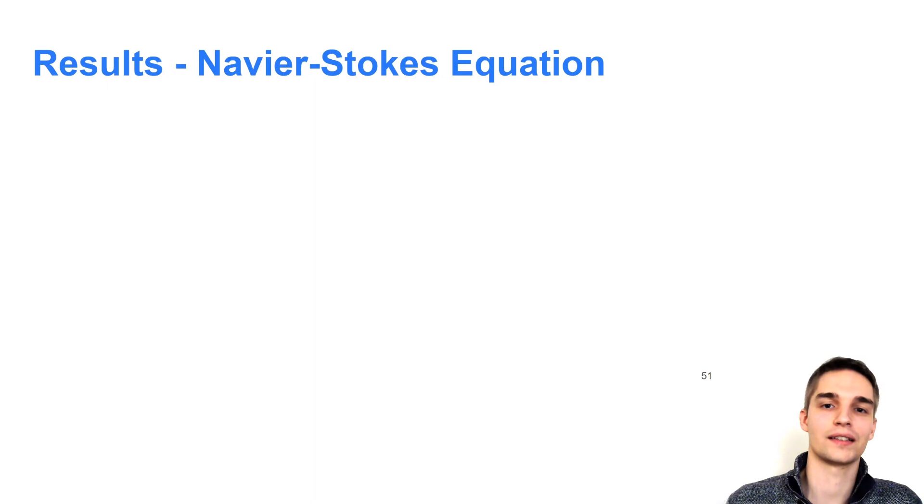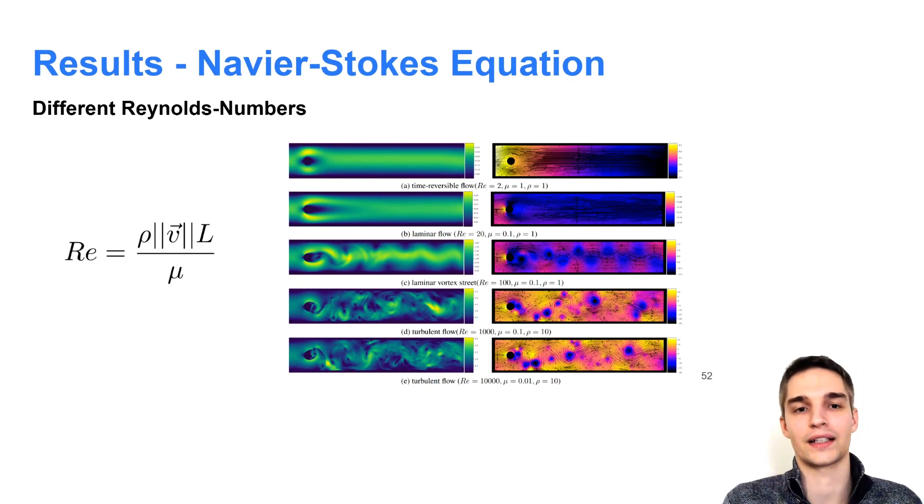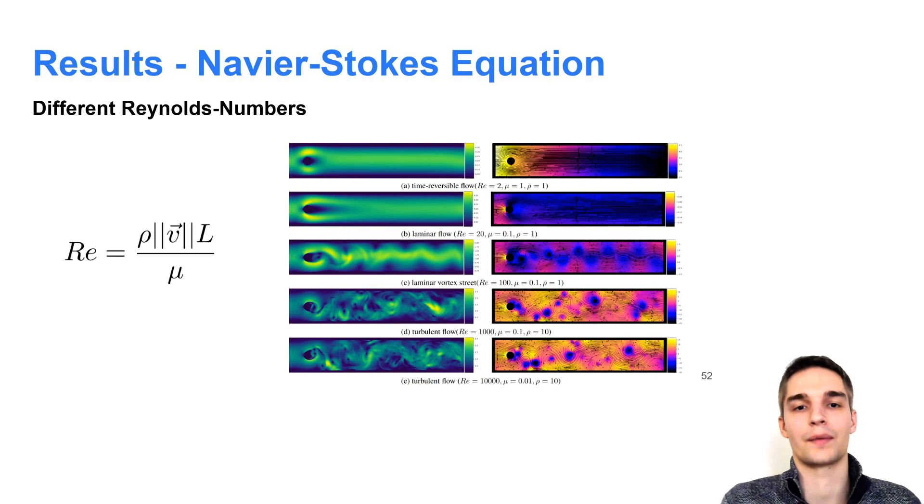We performed several experiments for a wide range of Reynolds numbers. The Reynolds number is an important unit-free quantity to characterize fluid dynamics. It puts the fluid's density, speed, viscosity and obstacle size into relation as written down here. At very low Reynolds numbers, we can obtain laminar and even time-reversible flow fields. At Reynolds 100, we obtain an oscillating von Kármán vortex street. And at high Reynolds numbers, we get turbulent flow fields.